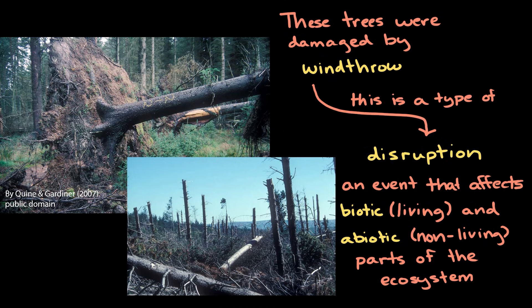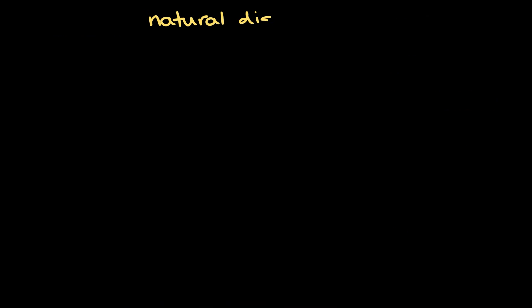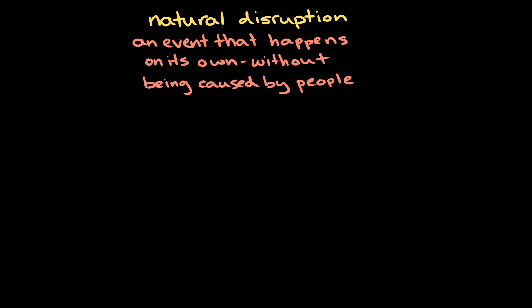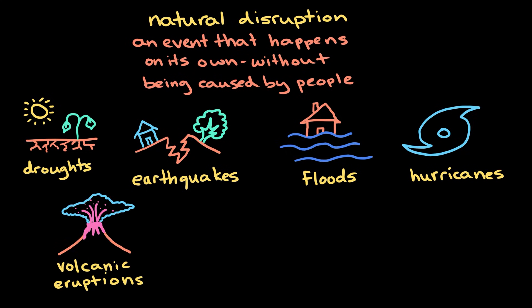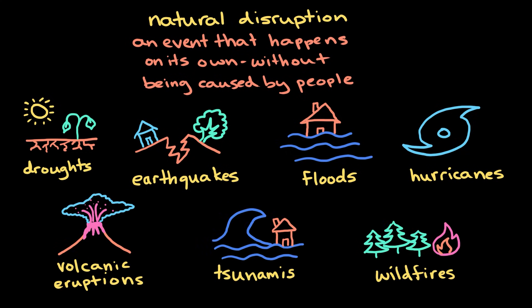We call this kind of event a disruption. In particular, wind throw is an example of a natural disruption, which is an event that happens all on its own without being caused by people. Other natural disruptions include droughts, earthquakes, floods, hurricanes, volcanic eruptions, tsunamis, and wildfires.